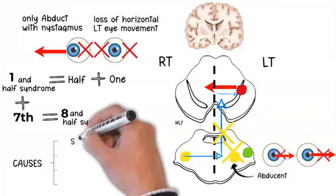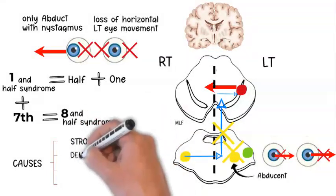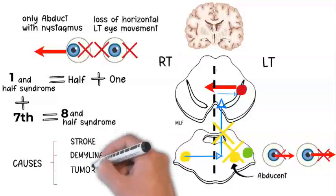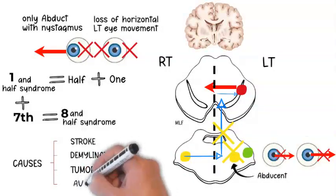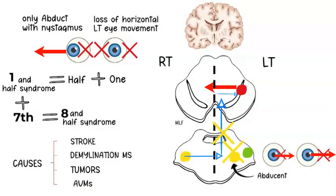Causes can include stroke, demyelination like MS, tumors, and AV malformations.